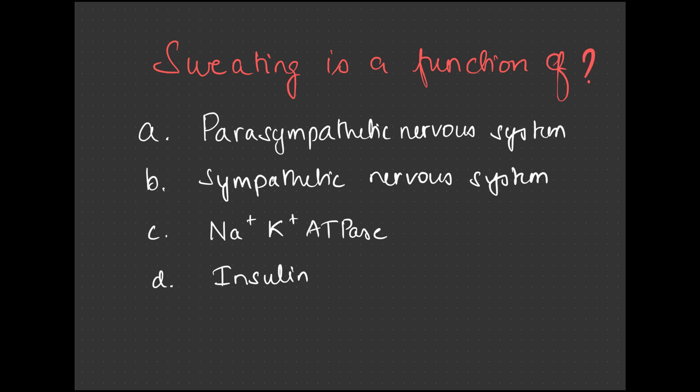When we run around, what happens? We sweat. That is to maintain the body temperature. We even saw some medication related to it which will help us keep warm. These medications target which system to affect sweating? Does it target parasympathetic nervous system or sympathetic nervous system or sodium potassium ATPase or insulin? Sweating is a function of sympathetic nervous system.